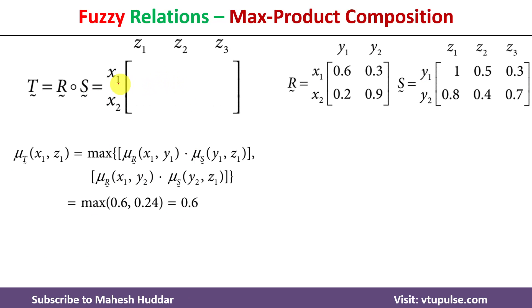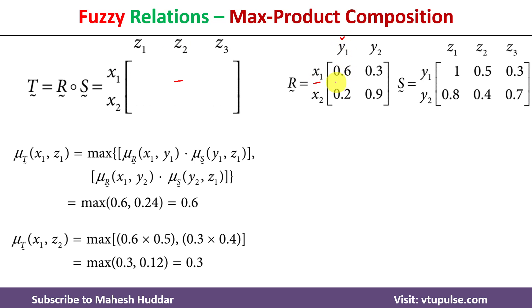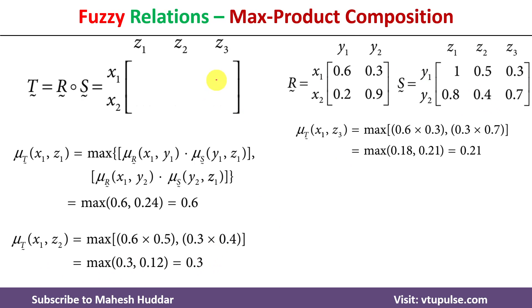For the membership value of x1z2: x1 to y1 is 0.6, y1 to z2 is 0.5, so 0.6 × 0.5 = 0.3. Then x1 to y2 is 0.3, y2 to z2 is 0.4, so 0.3 × 0.4 = 0.12. The maximum is 0.3. For x1z3: x1 to y1 is 0.6, y1 to z3 is 0.3, so 0.6 × 0.3 = 0.18. Then x1 to y2 is 0.3, y2 to z3 is 0.7, so 0.3 × 0.7 = 0.21. The maximum is 0.21.